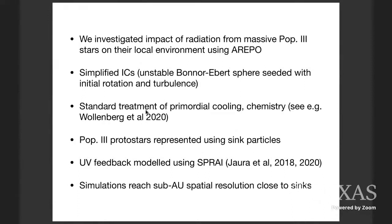We're following the collapse until we get up to number densities of around 10^14 particles per centimeter cubed, at which point we're replacing any regions that are still undergoing gravitational collapse using sink particles. Once we have sinks that have become sufficiently massive that we expect them to be sources of UV radiation — so once they get to masses of like 10 or 20 solar masses — we then follow the propagation of UV radiation, both photo-dissociating radiation and ionizing radiation around all of these sinks using the SPRAI algorithm. And we're actually following the radiation from all of the sources that we form in the simulation, not just the one central one.